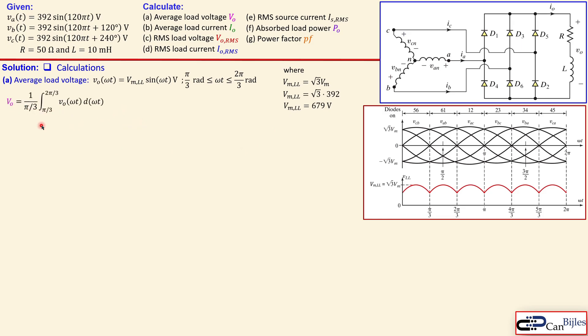Now this is the general formula for calculating the average value of the output voltage or the load voltage. In this case we know that our period has decreased from 2 pi to pi over 3 so that's why we have this here. We integrate from pi over 3 to 2 pi over 3 of this expression. When you substitute now in here in general form you get now this expression. We have also seen this in previous example. Now when you now substitute this value in here what we have calculated here 679 then you get here 648.4 volts. This is the average load voltage for this case. The average load current can be calculated using just Ohm's law so you just take this value and then divide it by 50 you get now 12.97 amps.